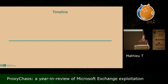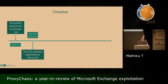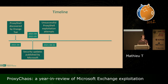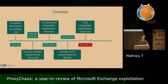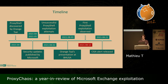In March 2021, Orange Tsai discovered the ProxyShell vulnerability chain, and in March and May, Microsoft published security updates addressing these vulnerabilities. Then on August 2nd, some unsuccessful ProxyShell exploitation attempts were observed, and the day after, Orange Tsai's presentation took place at Black Hat. Then on August 12th, we started seeing the first ProxyShell exploitation. Finally, a few days after that, CISA released their alert.